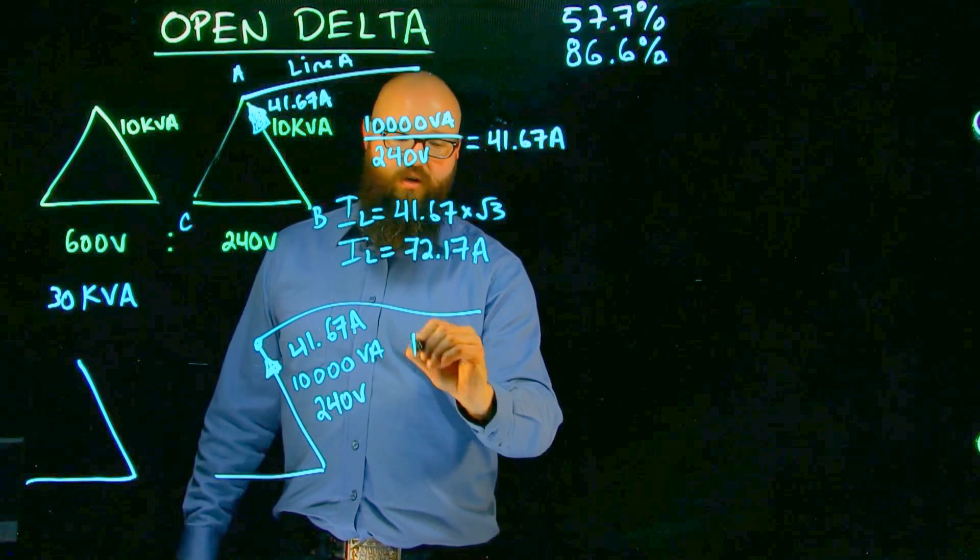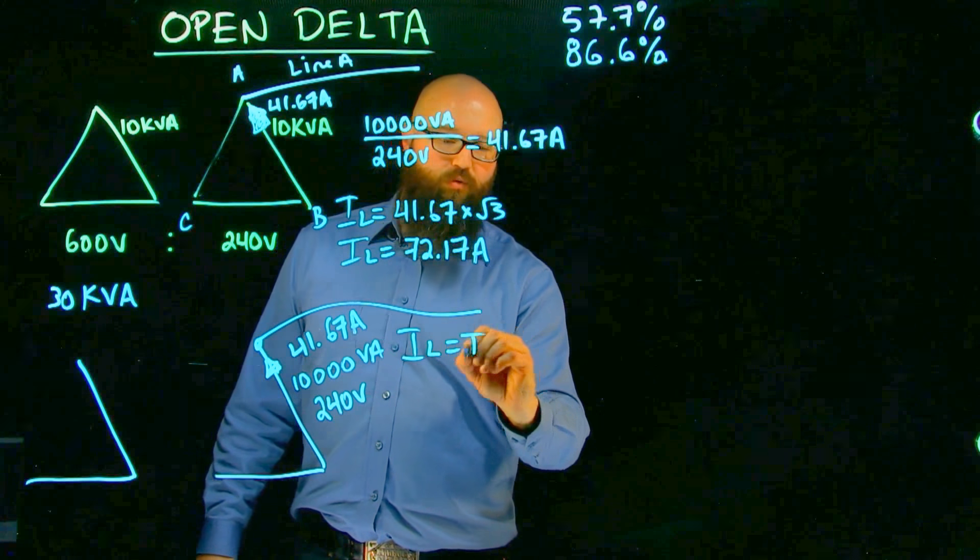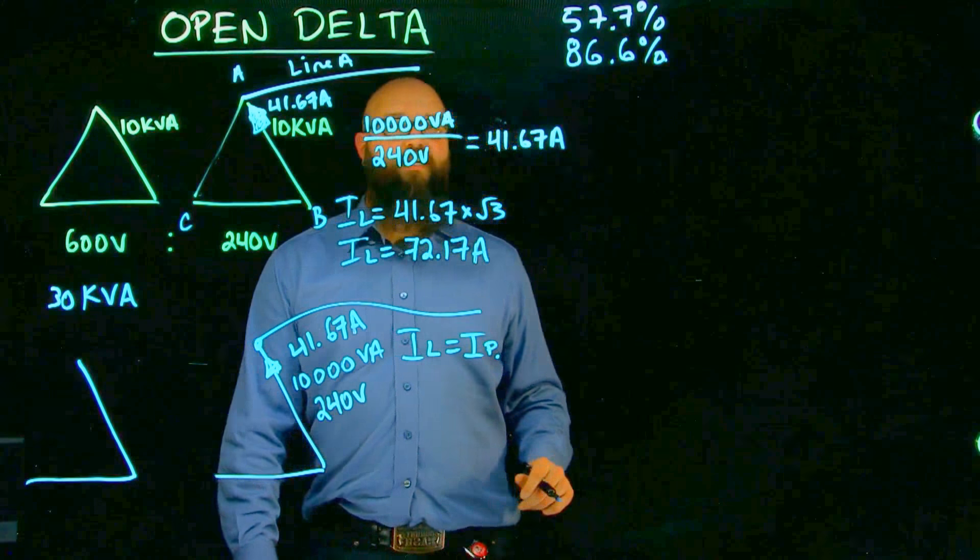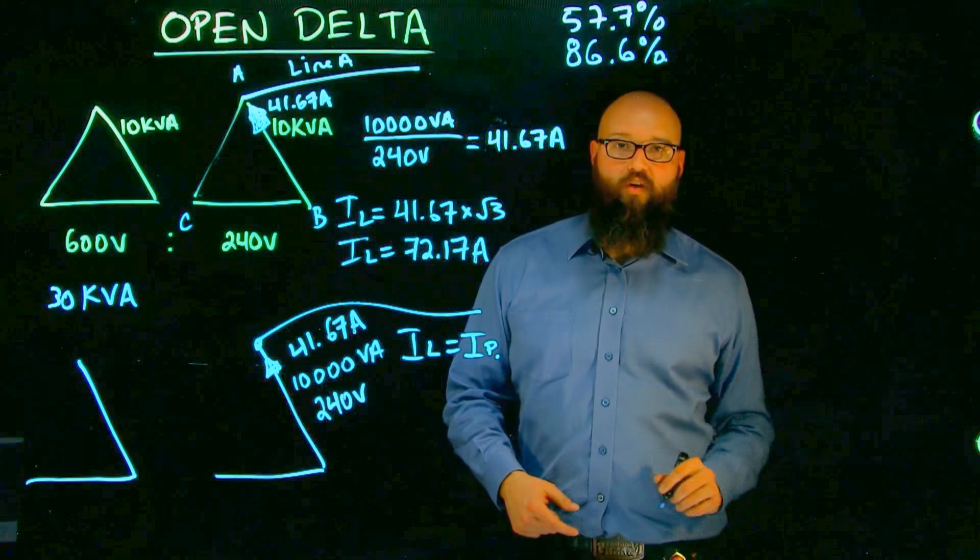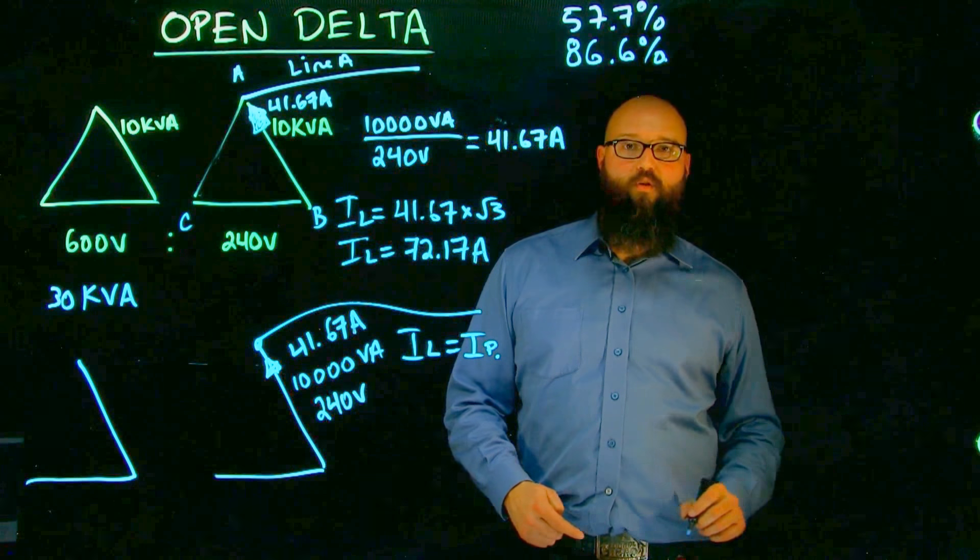So what happens is that our line current, our I line becomes equal to our I phase. Now, if we carry that through to calculate out what the output of our transformer now is,